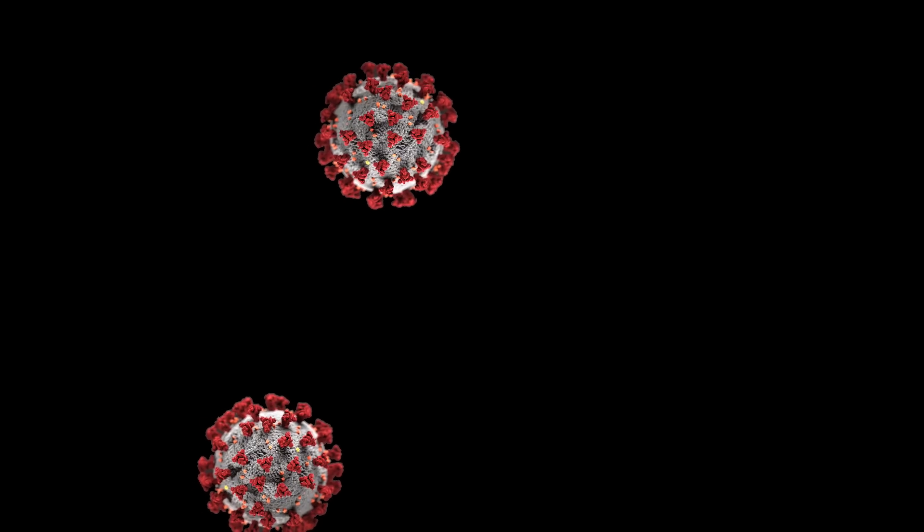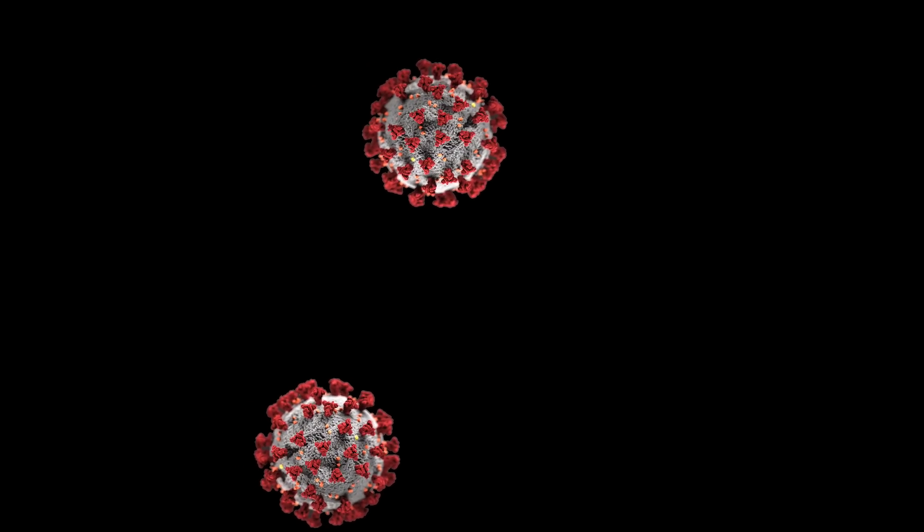By now, you've probably seen many images like this one, these artistic renderings of coronaviruses. Coronaviruses get their name from the spikes that protrude from the surface of a viral envelope that sort of resemble a solar corona. These spikes are actually the proteins that bind to human cells and allow the virus to infect them.